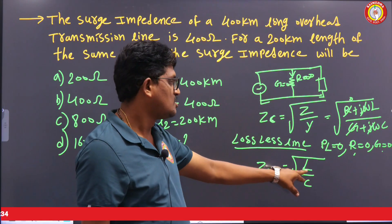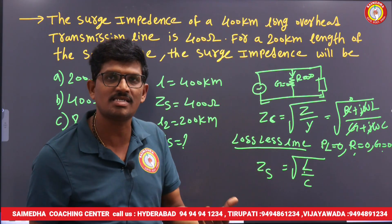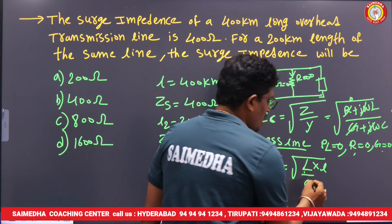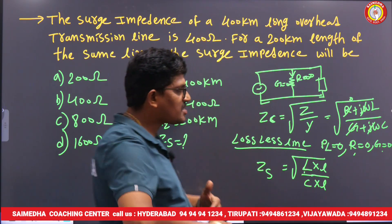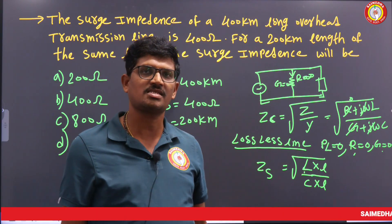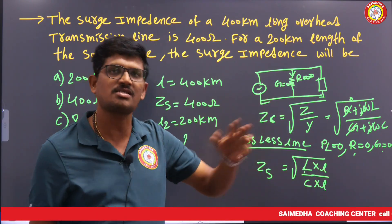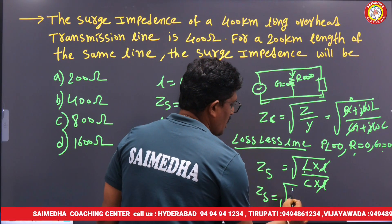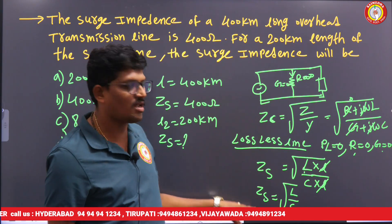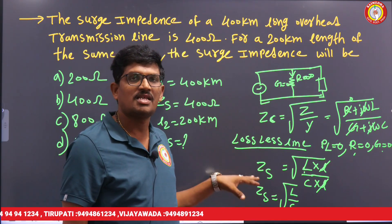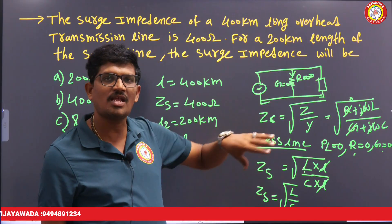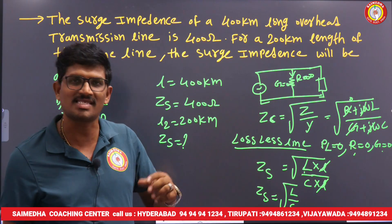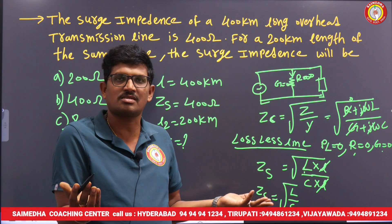The surge impedance formula is √(L/C), where L is inductance and C is capacitance. Inductance depends on length, and capacitance also depends on length. If line length increases, both L and C increase proportionally, so L/C remains constant. Therefore, surge impedance is independent of the length of the transmission line — there is no length term in this formula.